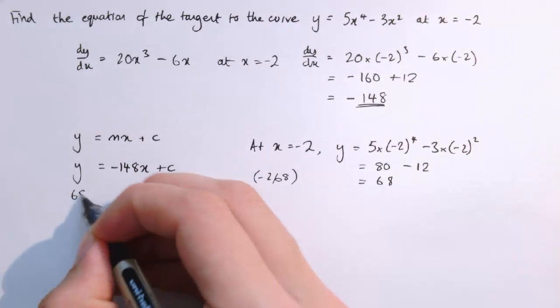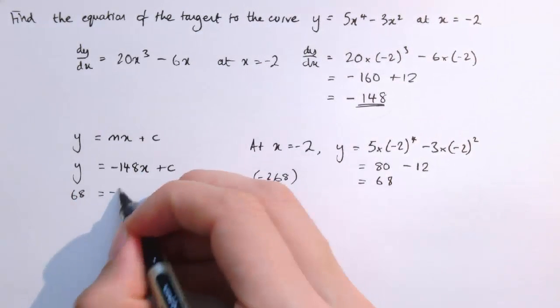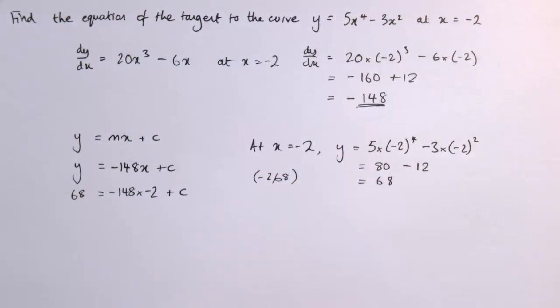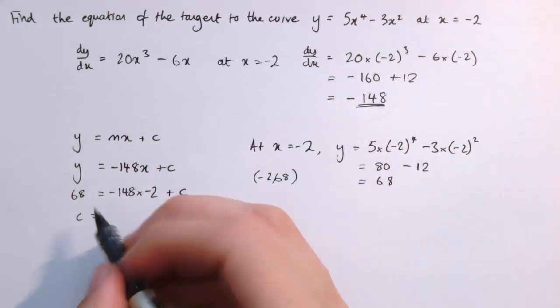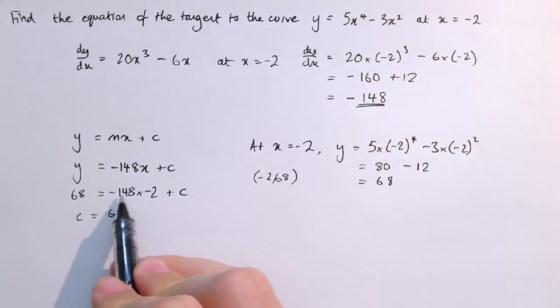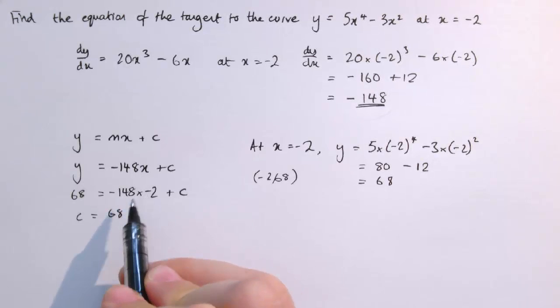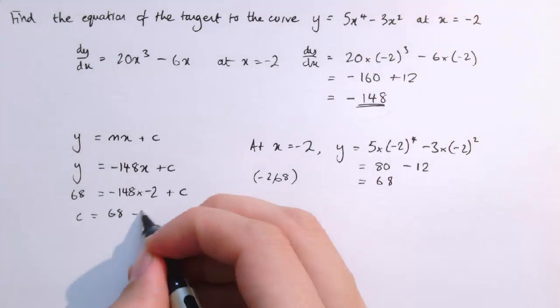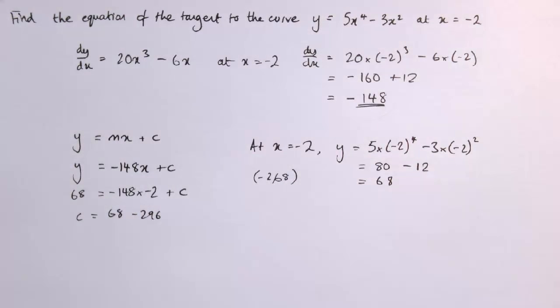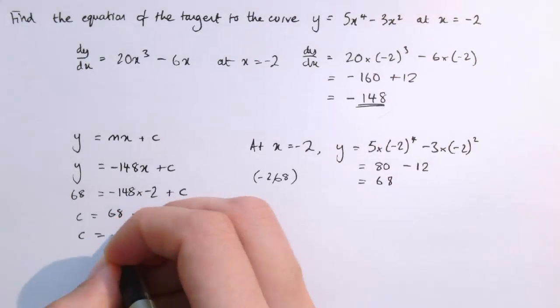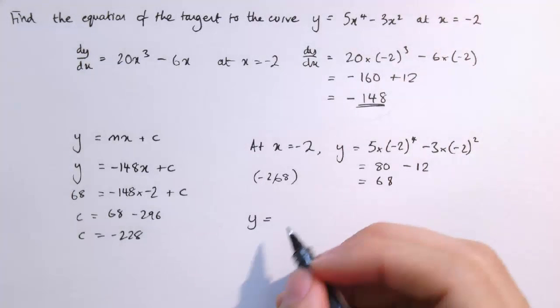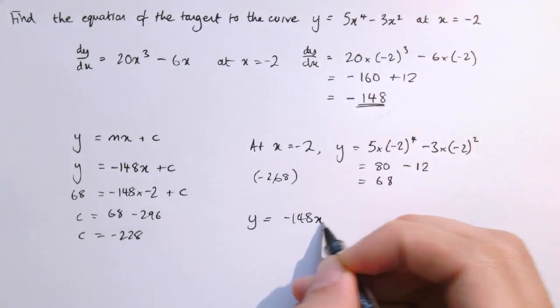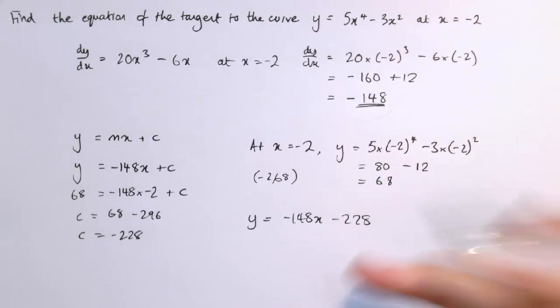I can substitute y equals 68 and x equals minus 2 to work out c. This gives minus 148 times -2, which is plus 296, and I subtract that to get minus 296. So 68 minus 296 equals minus 228. The equation of the tangent is y equals minus 148x minus 228.